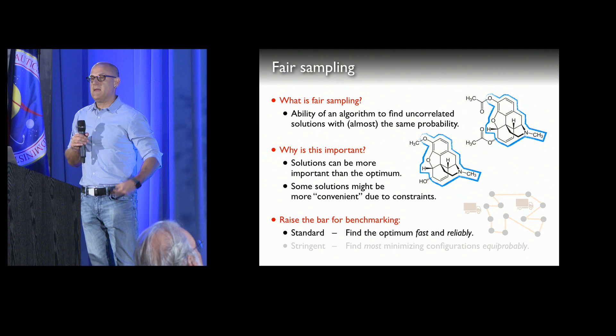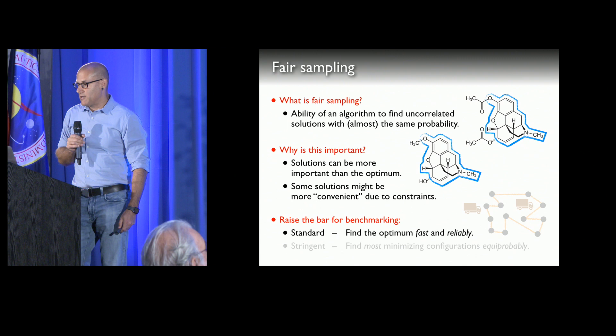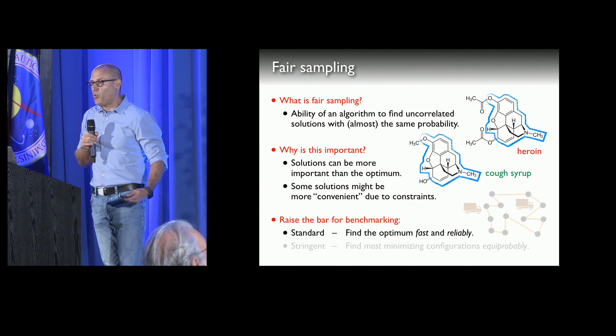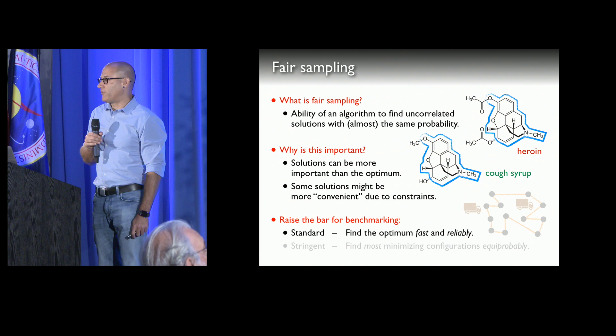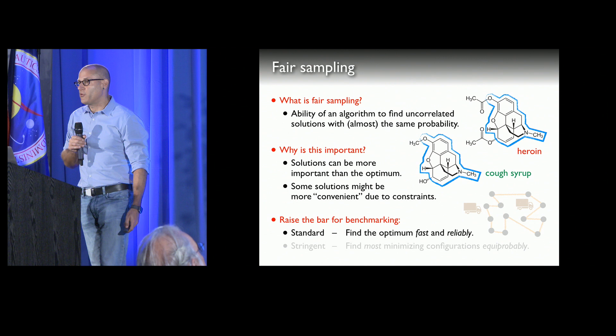If you look at two molecules with a very similar backbone, one thing that is important in drug design is to find molecules that are similar but differ slightly, such that you can get the same kind of medical benefit without side effects. These molecules may be very similar yet have very different effects on you — it's important to find things that don't have the effects of heroin but prevent you from coughing. Another reason is that some solutions might be more convenient due to constraints.